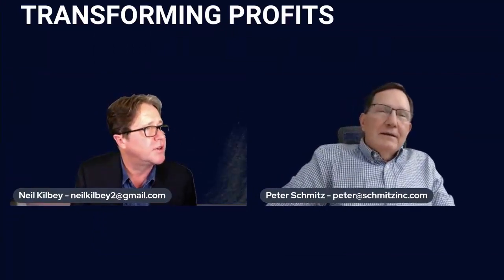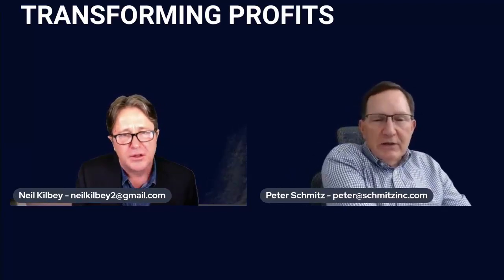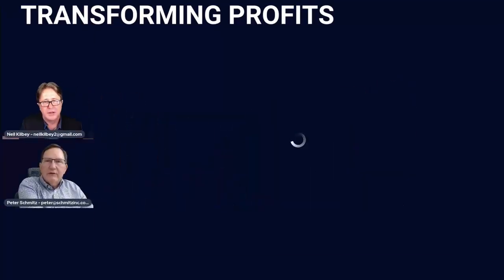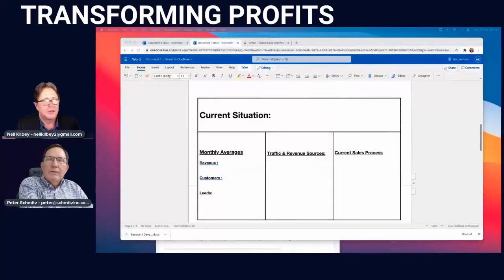Peter: The next piece of the process is a pretty in-depth dialogue with the business owner about his current process, and then the second part is the clutter that's in the way. Let's take a look at the current process.